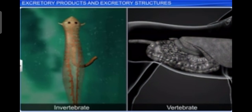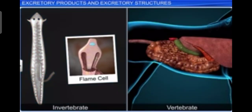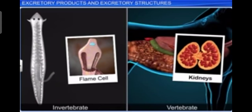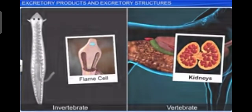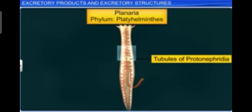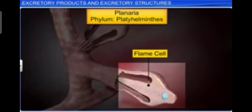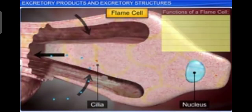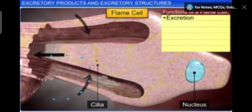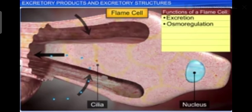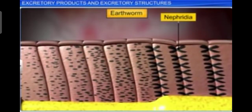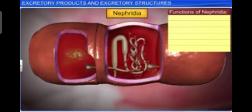Protonephridia are primarily concerned with ionic and fluid volume regulation, i.e. osmoregulation. Nephridia are the tubular excretory structures of earthworms and other annelids. Nephridia help to remove nitrogenous waste and maintain fluid and ionic balance. Malpighian tubules are the excretory structures of most insects including cockroaches, and they help in the removal of nitrogenous waste and osmoregulation.